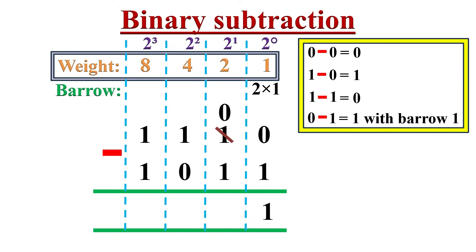Now we move to the next — 2's column. We have 0, because 1 was already borrowed to the 1's column. So here it is 0 minus 1. Once again we need to borrow from the next column, since 0 is lesser than 1. In the next column, the weight of the 1 is equal to 4. So this 1 will be replaced by 0, and whenever this 4 goes into the 2's column it becomes 2 times 2. So we are actually subtracting 2 twos minus 1 two, which equals 1 two. We write 1 as the answer in the 2's column. Whenever we borrow from the next column, we write it as 2 in that particular column, because in the binary number system each digit's place value increases by 2 times.